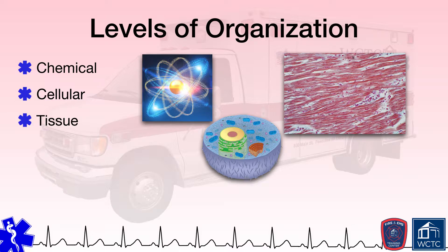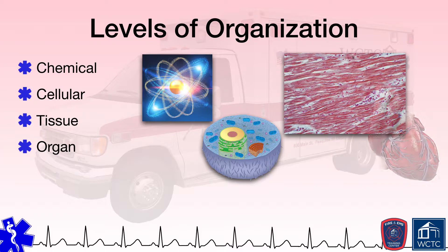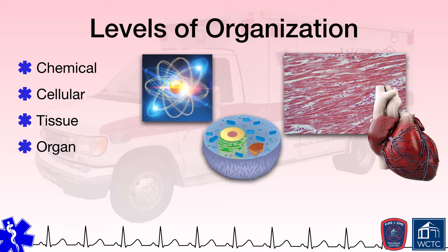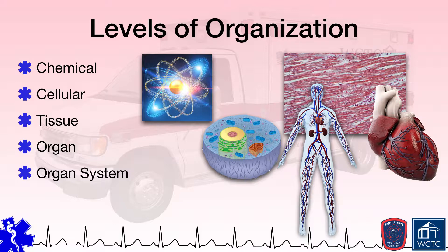These tissues then combine with others to create an organ that serves a specific function within the body. Organs are the next level of organization. Cardiac muscle tissue is not the only tissue within the heart — conductive tissue for the heart's electrical system, valves, blood vessels, and connective tissue all work together to form a fully functioning heart. When you combine several organs to serve a specific function, you have an organ system. The cardiovascular or circulatory system contains not only the heart, but a vast network of blood vessels designed to distribute blood and critical oxygen to the cells within the body.